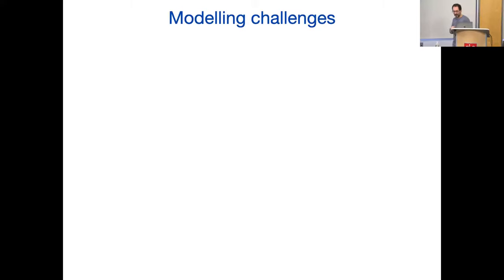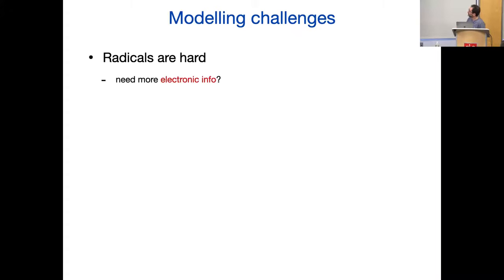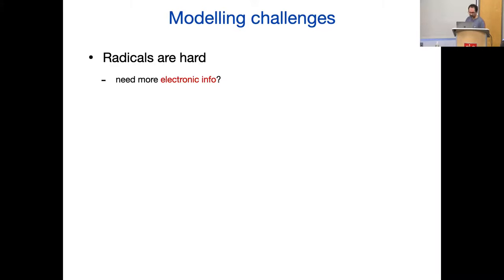In this last quarter of the talk, I want to highlight a few challenges and what we're thinking about now — everything I told you is the past 10 years. One thing that is definitely true, as any chemist would have told me: radicals are hard. Ground state closed shell molecules are much easier. In many instances you'd like to study radicals, and it turns out fitting potentials for radicals — which nobody has really tried before — is much, much harder. I'm not even sure at the moment it's possible.